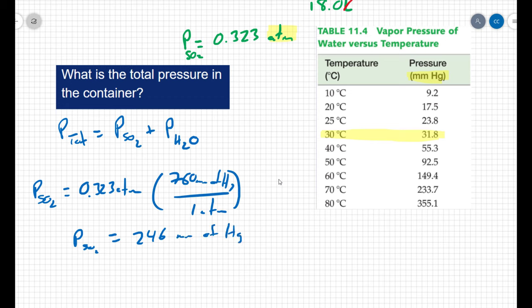So now to find the total pressure, my total pressure is going to equal the pressure of the sulfur dioxide, which is 246 millimeters of mercury, plus the pressure of the water, which we see from the table, is 31.8 millimeters of mercury. And I get a total pressure of 277 millimeters of mercury.